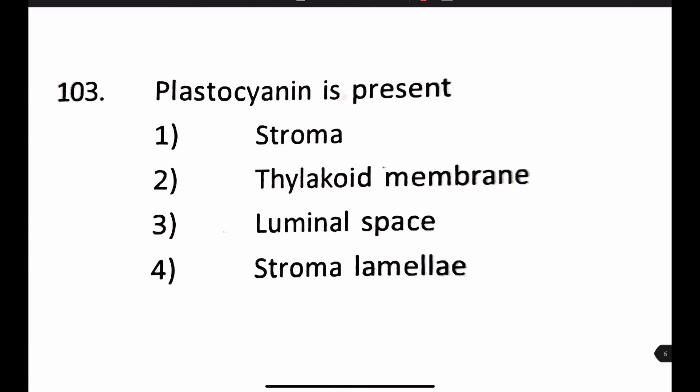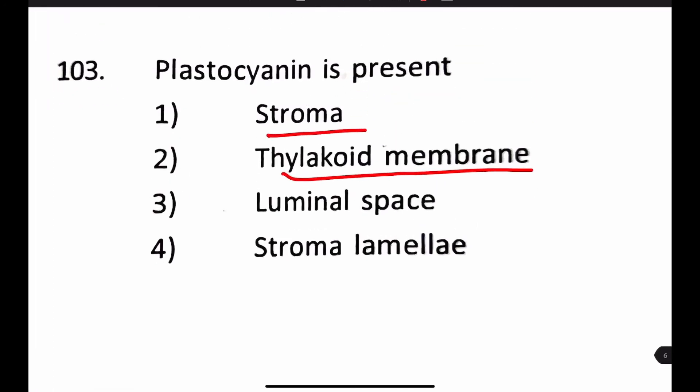Plastocyanin is present in: stroma, thylakoid membrane, luminal space, or stroma lamella? Stroma is where the chloroplasts are present — won't be the right answer. Thylakoid membrane has chlorophyll pigments. Luminal space is actually the right answer where plastocyanin is found. Stroma lamella is again not correct. So option number 3, luminal space, is the correct answer.